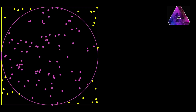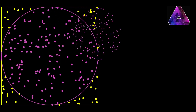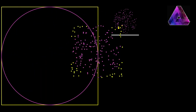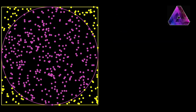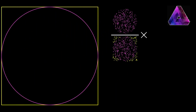So let's do this first with 200 dots. We take 200 dots, count them, divide by the total number of dots, multiply by 4, and we get about 3.04. Let's do this with 500 dots — count them all, divide, multiply by 4, and you get about 3.112.